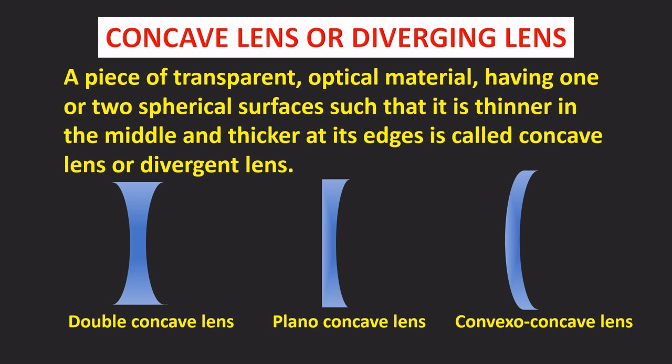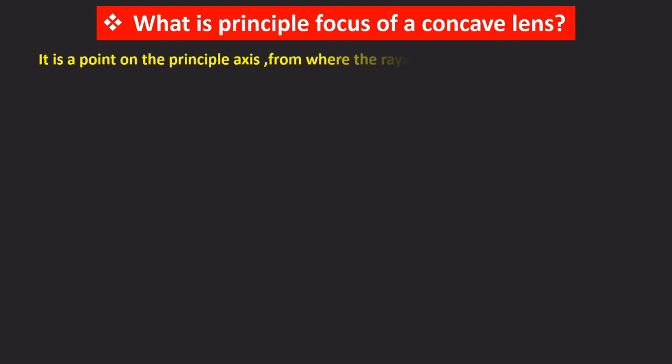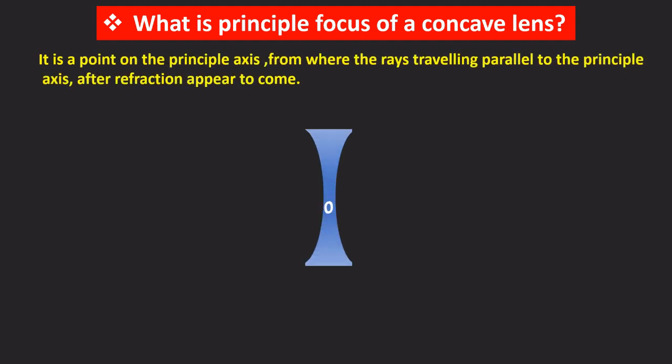What is principal focus of a concave lens? It is a point on the principal axis from where the rays traveling parallel to the principal axis after refraction appear to come. Let this be the concave lens with optic center O. The line passing through the optic center is called principal axis.